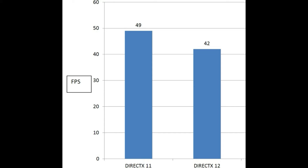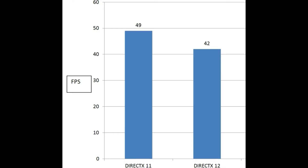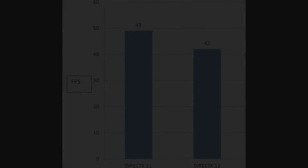To recap and compare both, DirectX 11 and DirectX 12 show a difference of 7 frames per second. That's not much of a change, but DirectX 12 is supposed to give you higher frame rates through better optimization.